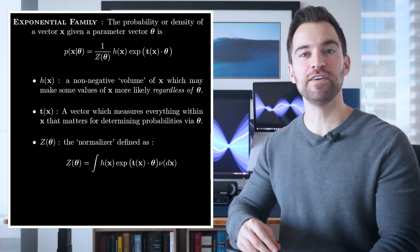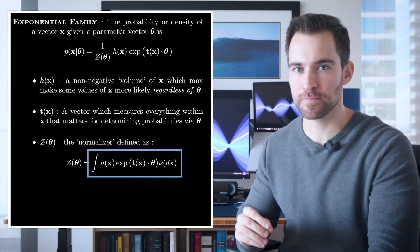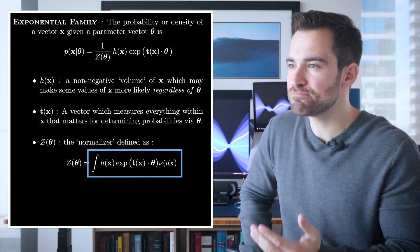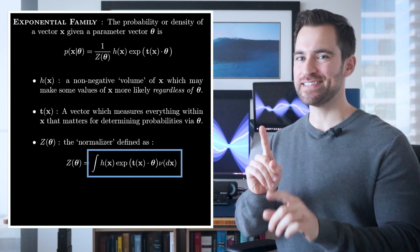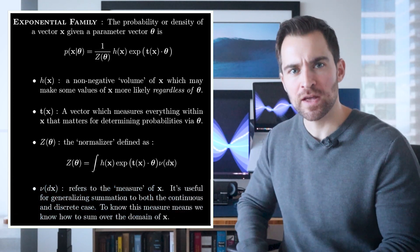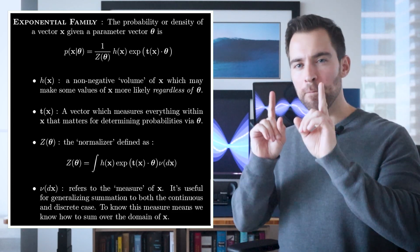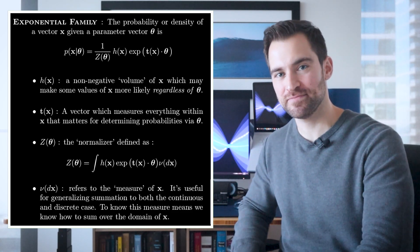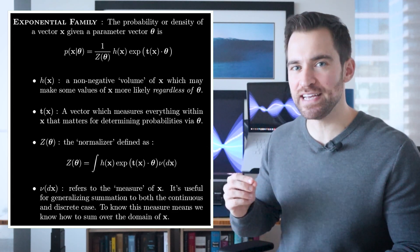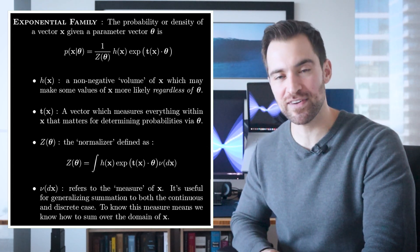One other thing. It's quite easy to imagine that for some choices of h of x and t of x, there could be parameter values for which this integration is infinite. Well, for that, we simply rule out those parameters. We only consider parameters where the normalizer is finite. Sometimes it's best to just throw things away. And one last thing. You may have noticed this one weird term. Well, it is indeed weird. Weird enough to get its own bullet. The term refers to the measure of x. In general, it can provide the volume of x, just like h of x does. But we can dedicate that task entirely to h of x without losing anything. What remains of nu of dx is to generalize to both the continuous and discrete domains. To simplify, to know nu of dx means you know how to sum over the space of x, which will be either taking the integral over a continuous function or summing over discrete events.